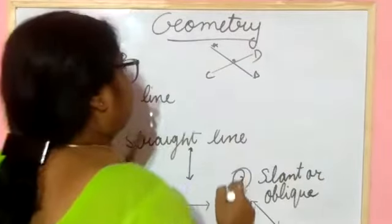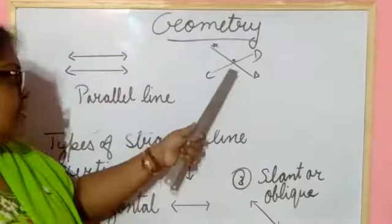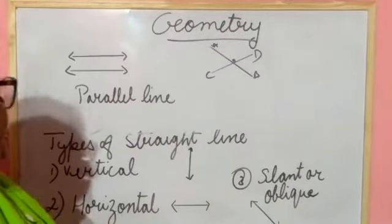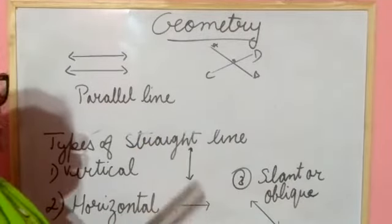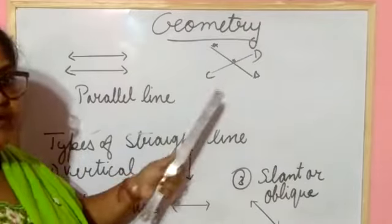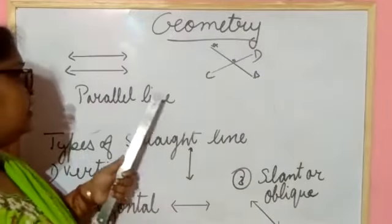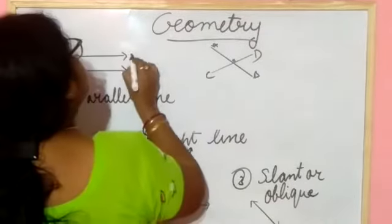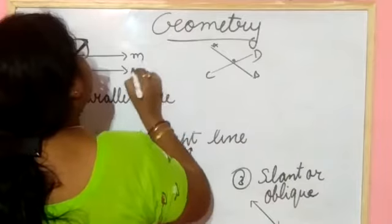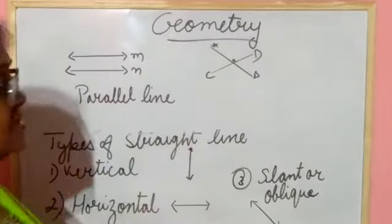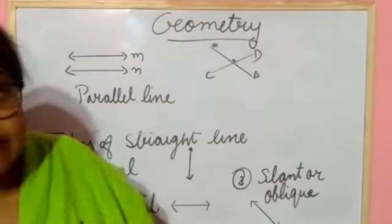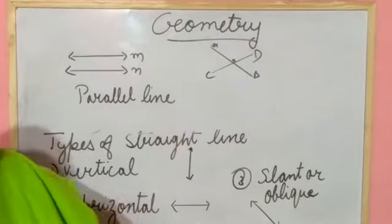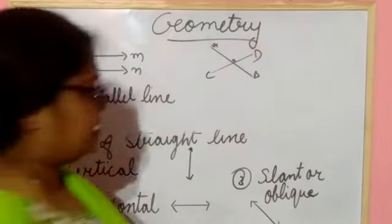Next one is the intersecting line. Line A and line B are cutting at point O. These two lines are cutting at one point, intersecting each other. This is known as an intersecting line.